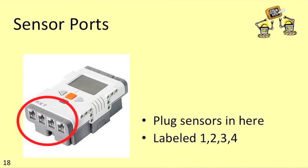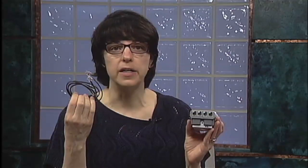On the bottom side of this brick you'll find these four numbered sockets 1, 2, 3, and 4. These are called the sensor ports. You'll use some cables that look a lot like phone cables to connect your different sensors into these sockets.